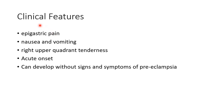Now let us see about the clinical features of HELLP syndrome. The patient presents with epigastric pain, nausea, and vomiting. On examination, there will be right upper quadrant tenderness. HELLP syndrome is usually acute in onset and can even develop without signs and symptoms of pre-eclampsia.